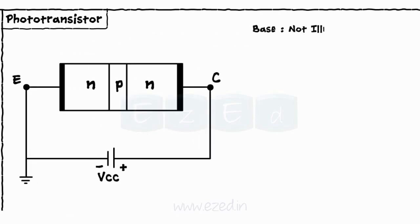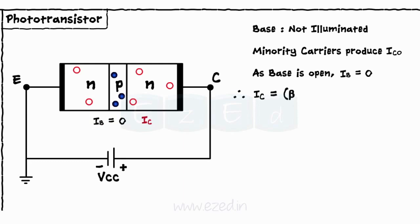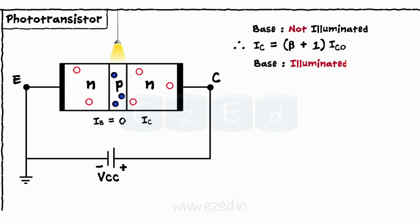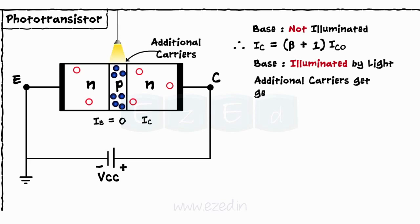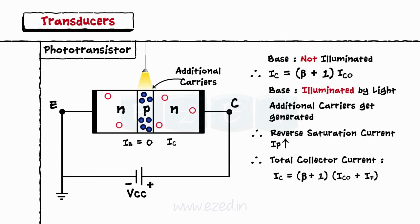When the base is not illuminated by light, the thermally generated minority carriers produce reverse saturation collector current IC0. As the base is open, the base current IB is 0. Thus, the collector current is found to be IC equals (beta + 1) into IC0. When the base is illuminated by light, additional carriers get generated in the base, which result in additional reverse saturation current IP. Thus, the total collector current in presence of incident radiation becomes IC equals (beta + 1) into (IC0 + IP). Thus, in a phototransistor, light energy gets converted into current.